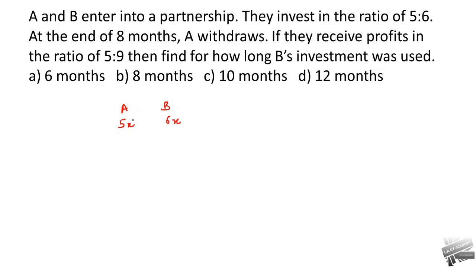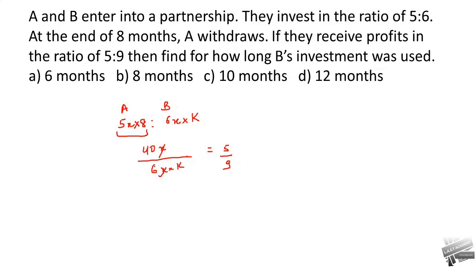A was invested in the business for eight months, so A's weighted capital is 5x multiplied by 8, giving 40x. B's duration is unknown, so we take it as k. The ratio of their weighted capitals equals the profit ratio: 40x divided by 6xk equals 5 to 9. Solving for k gives k equals 12 months, so B was invested for 12 months.